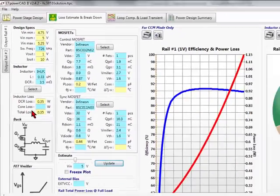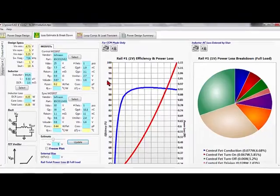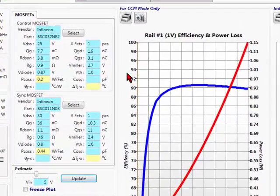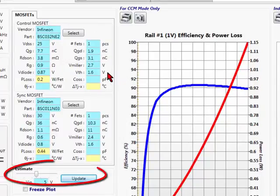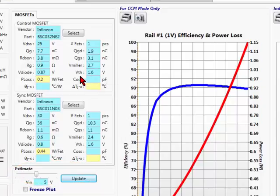MOSFET power losses include both conduction and switching losses, calculated at maximum output current and at the input voltage value selected with the input voltage slider. The thermal resistance is not a part of the FET model and must be manually entered if temperature estimation is desired.